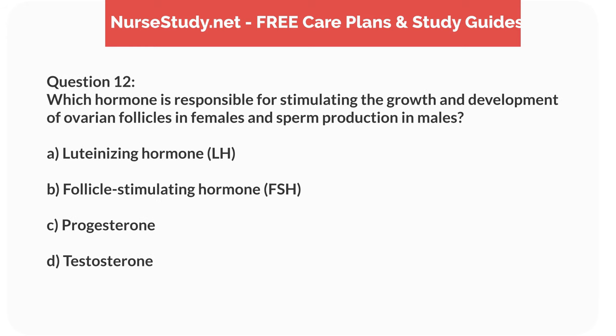Question 12. Which hormone is responsible for stimulating the growth and development of ovarian follicles in females and sperm production in males? A. Luteinizing hormone (LH). B. Follicle-stimulating hormone (FSH). C. Progesterone. D. Testosterone.